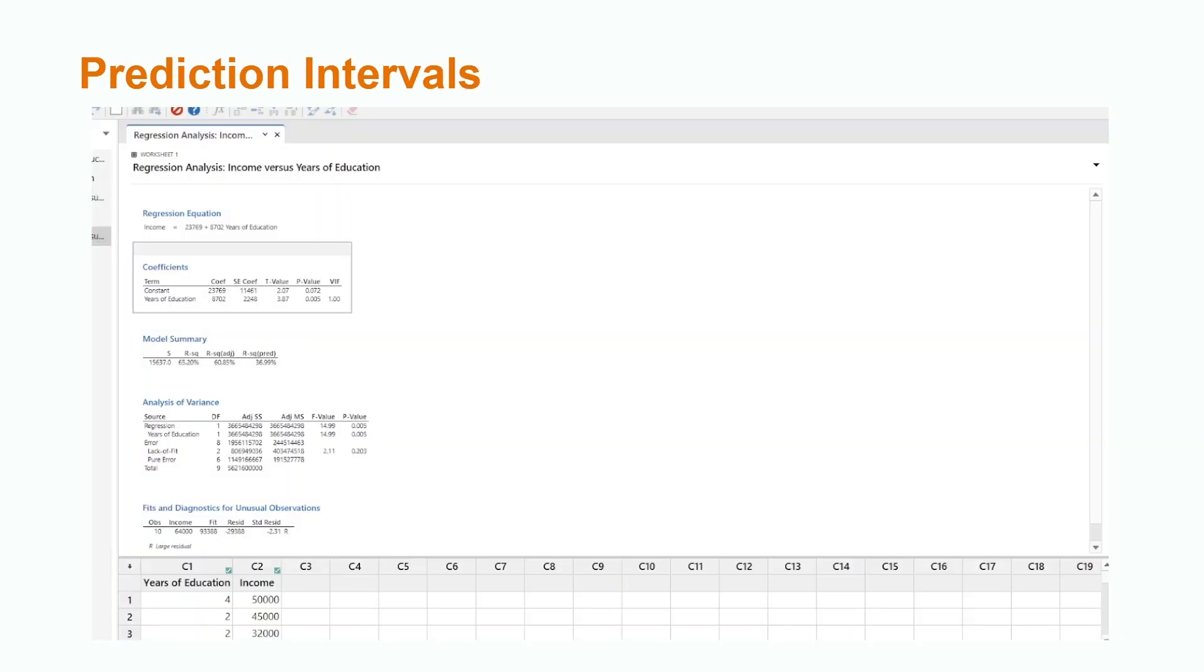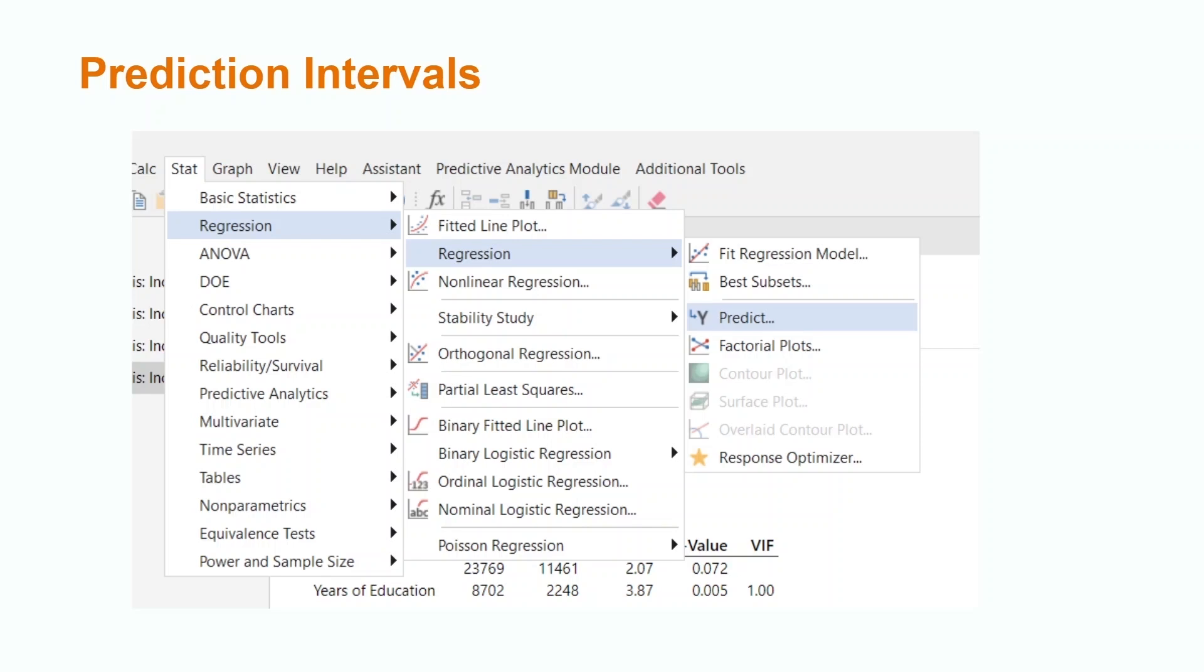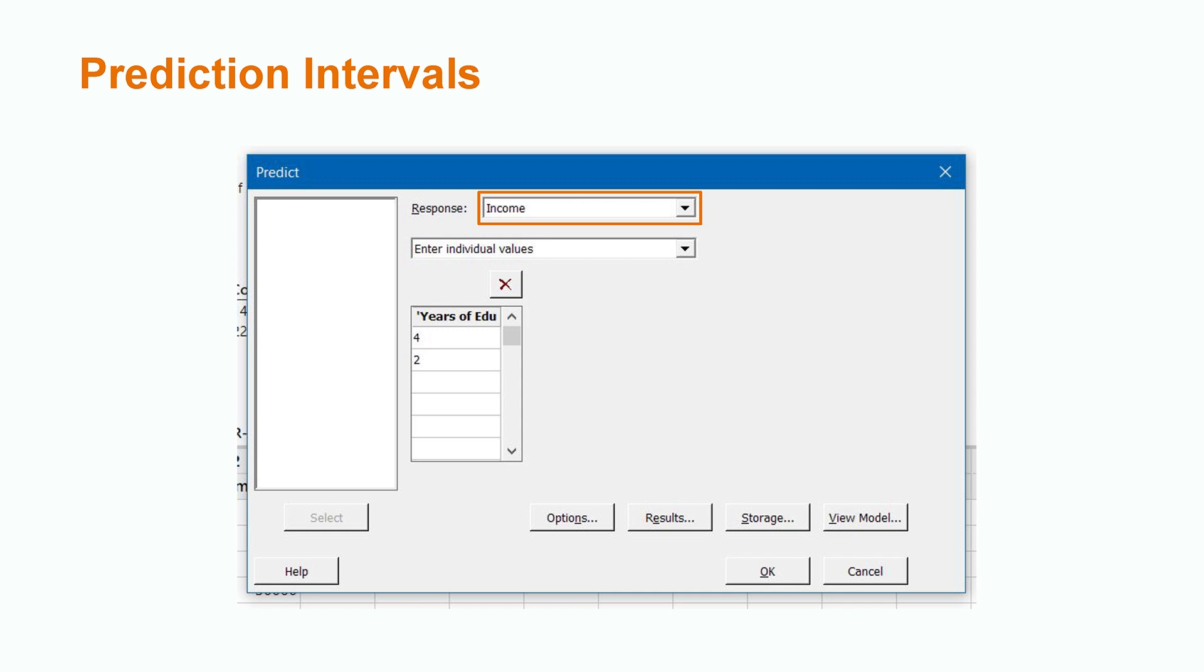After clicking the ok button a regression equation will appear above our data. Next we will select stat on the ribbon then regression and then predict. We then choose income as our response variable and enter the values 4 and 2 as the values for years of education. We now click the ok button.